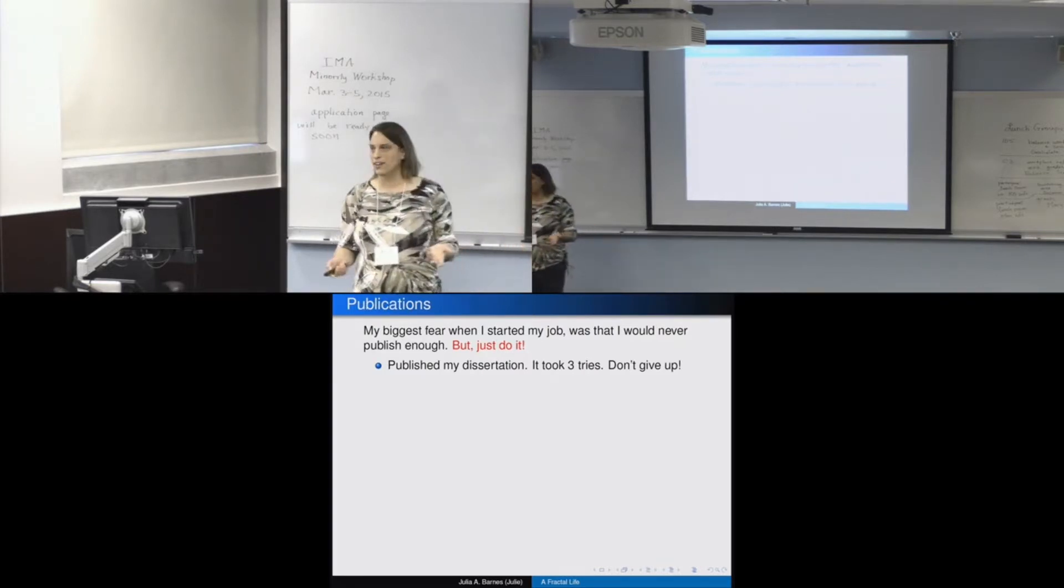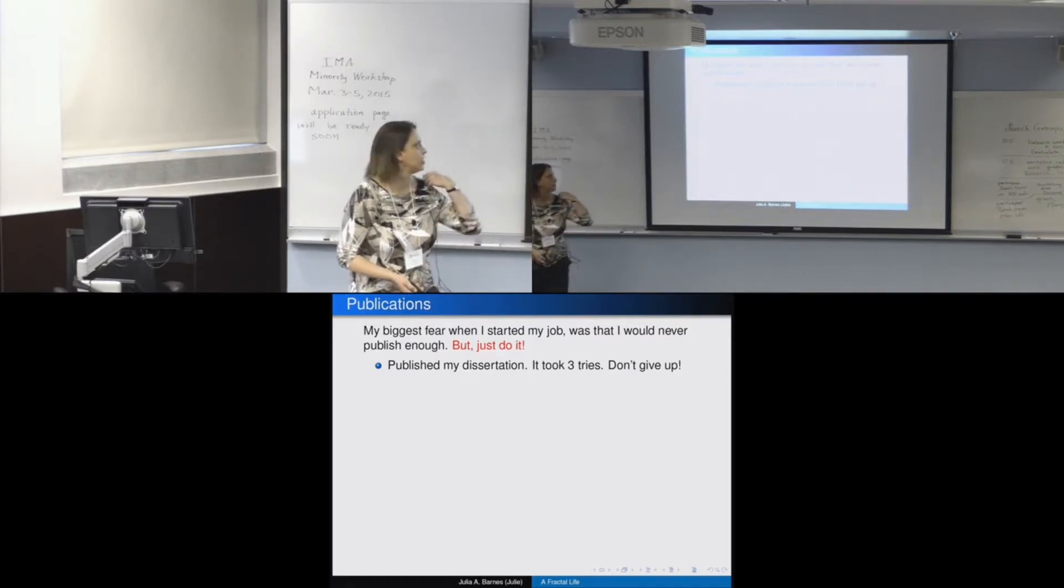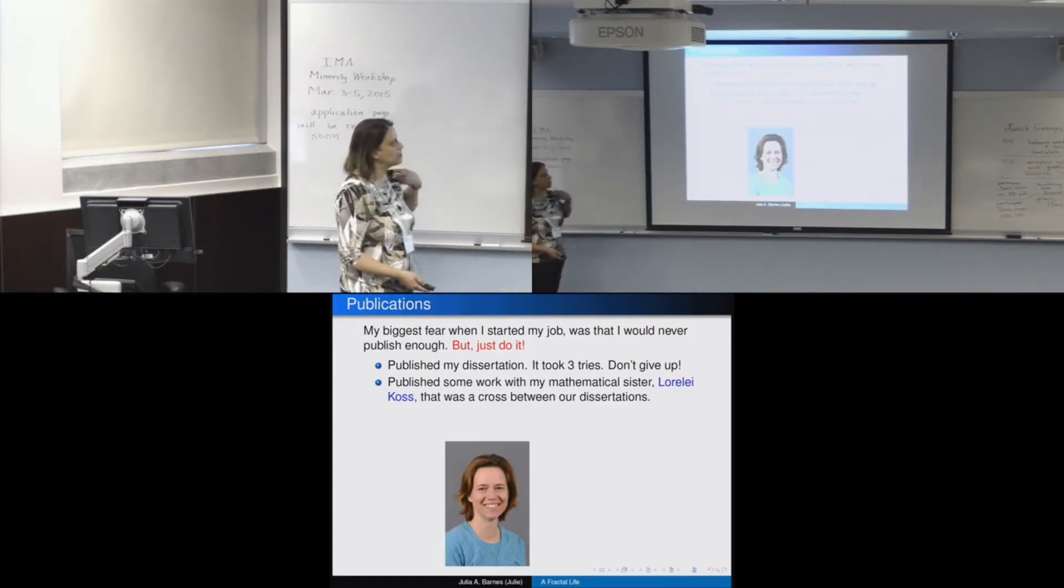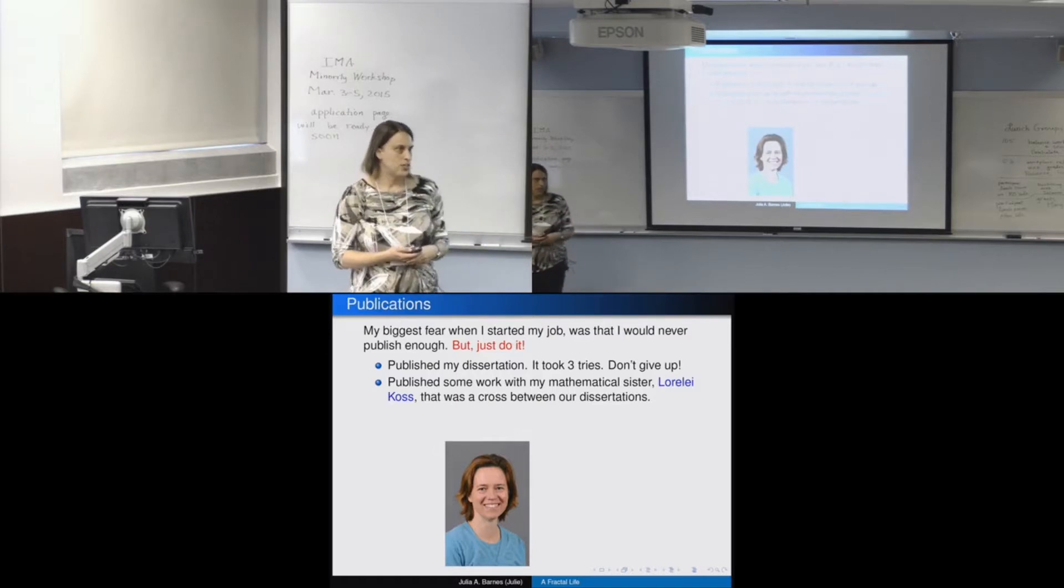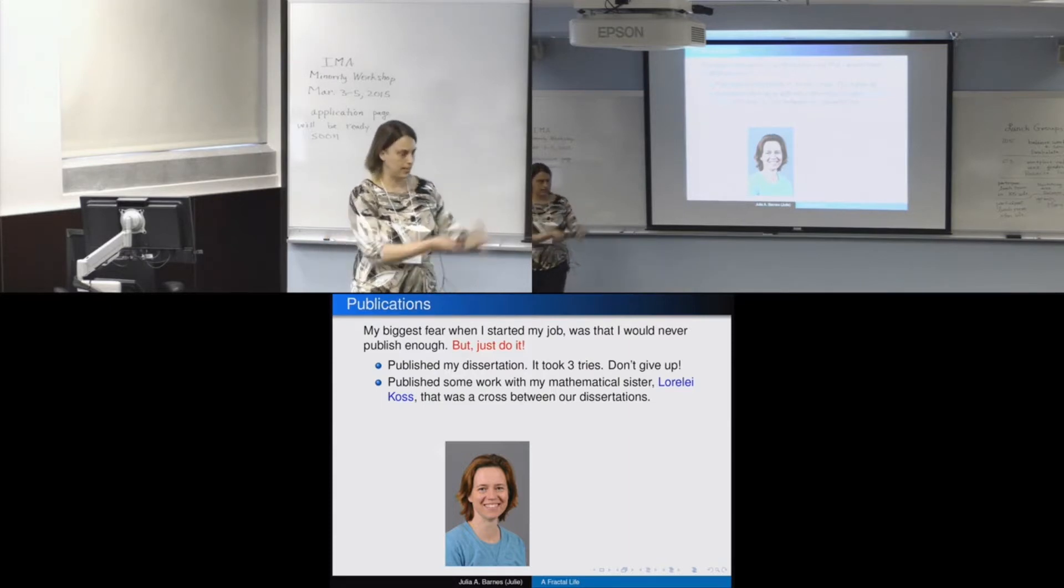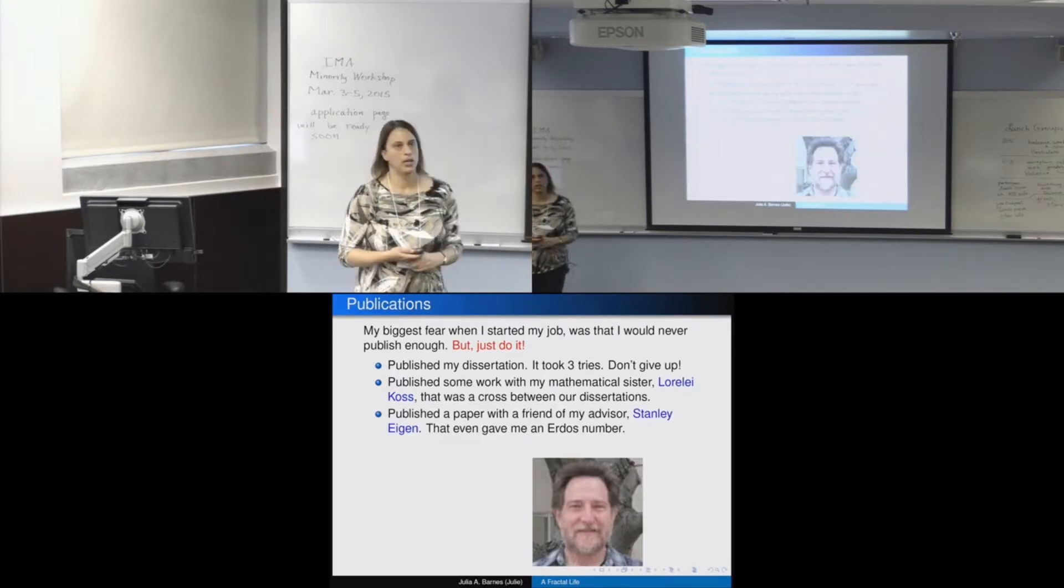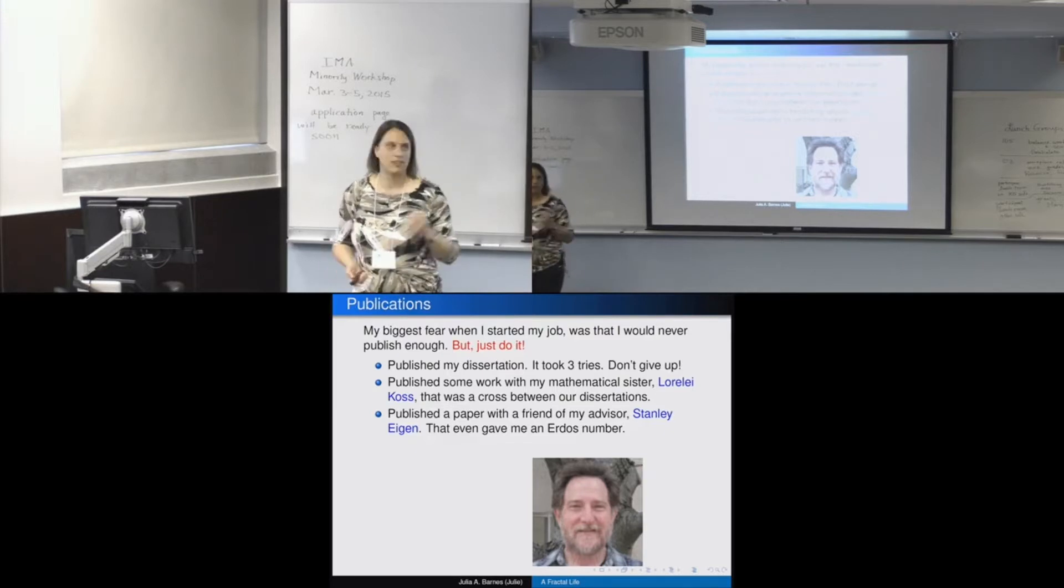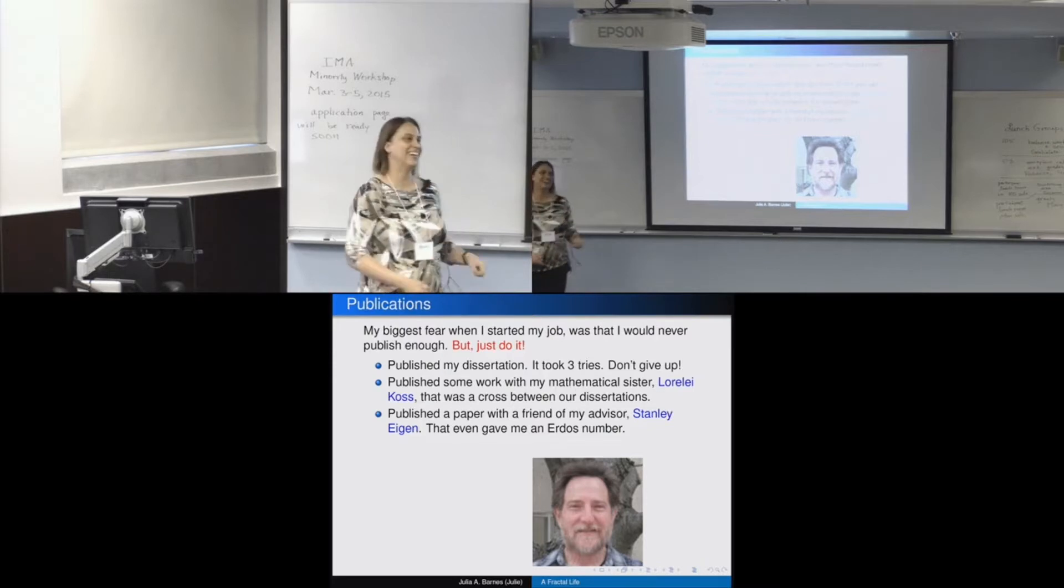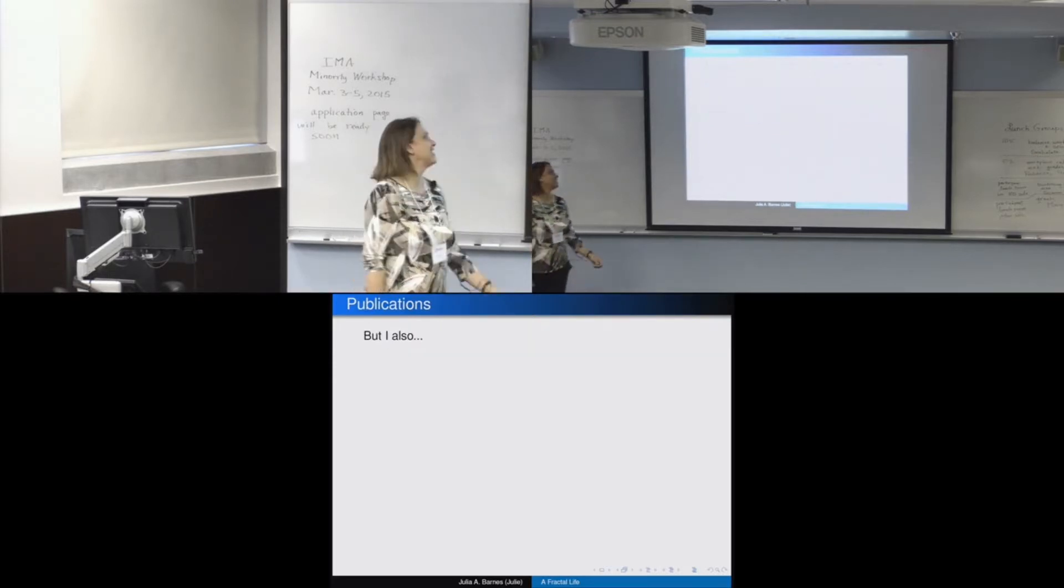But you've done the work. You've got your PhD. You should be able to publish it. I also did some work with my mathematical sister. She had actually extended some of my results. So we were able to get a paper out of that. I also published a paper with a friend of my advisor. His name was Stanley Eigen, which is a great math name. He also gave me an Erdős number. He published a paper with somebody who published a paper with Erdős.